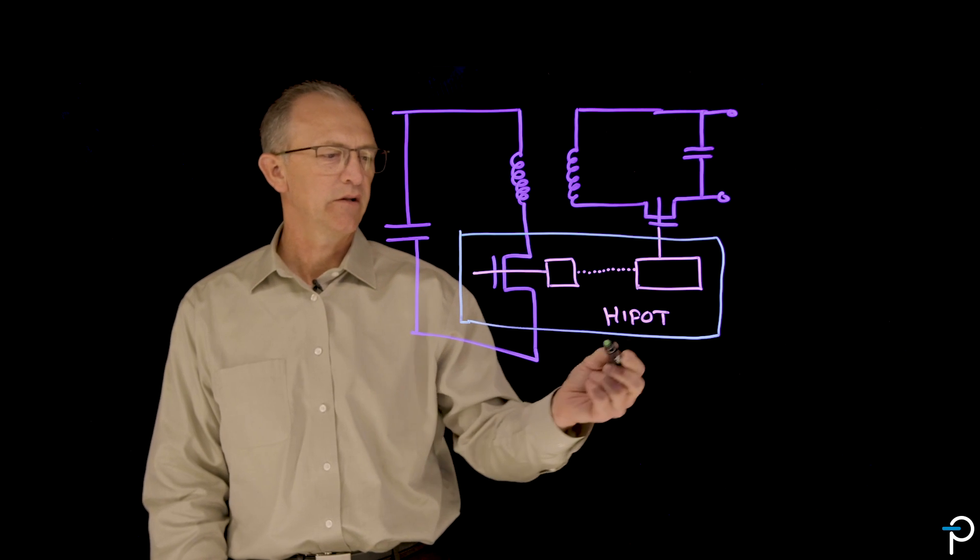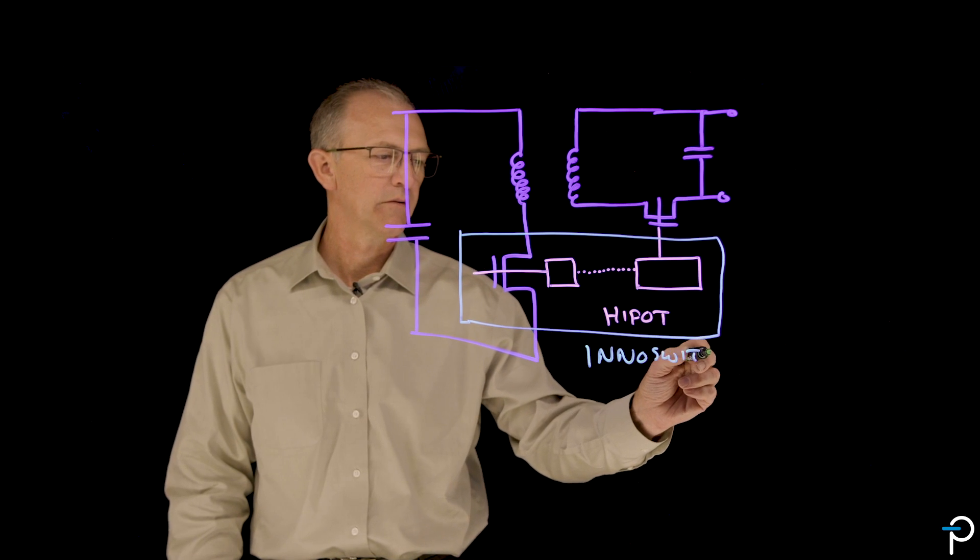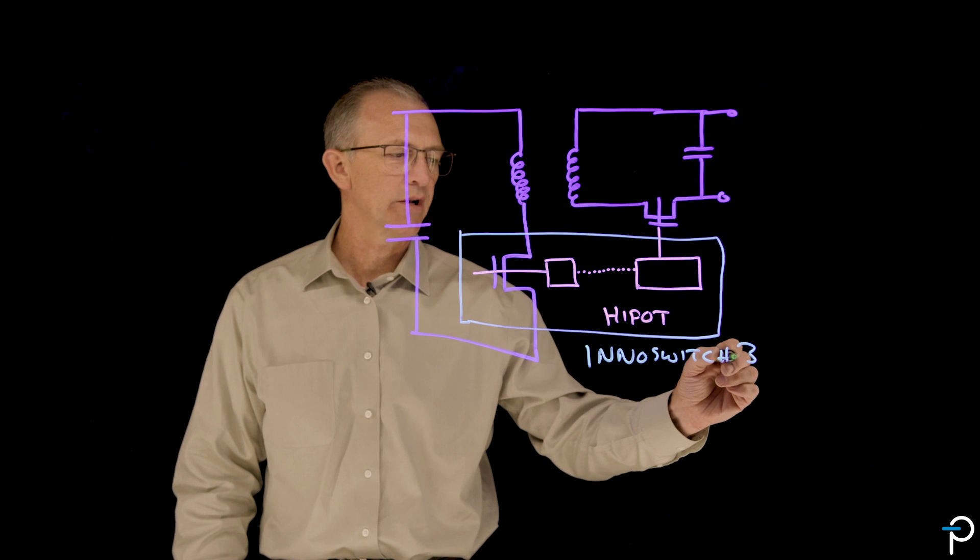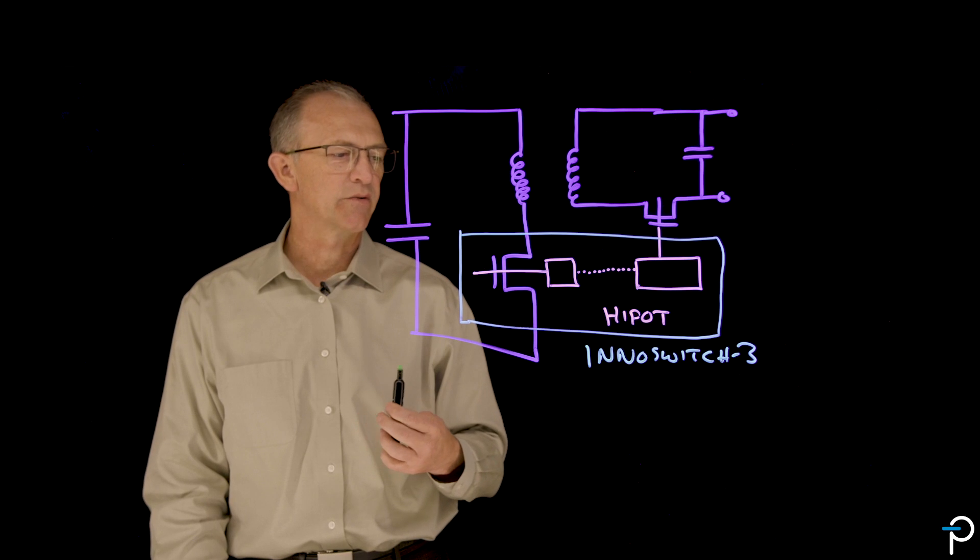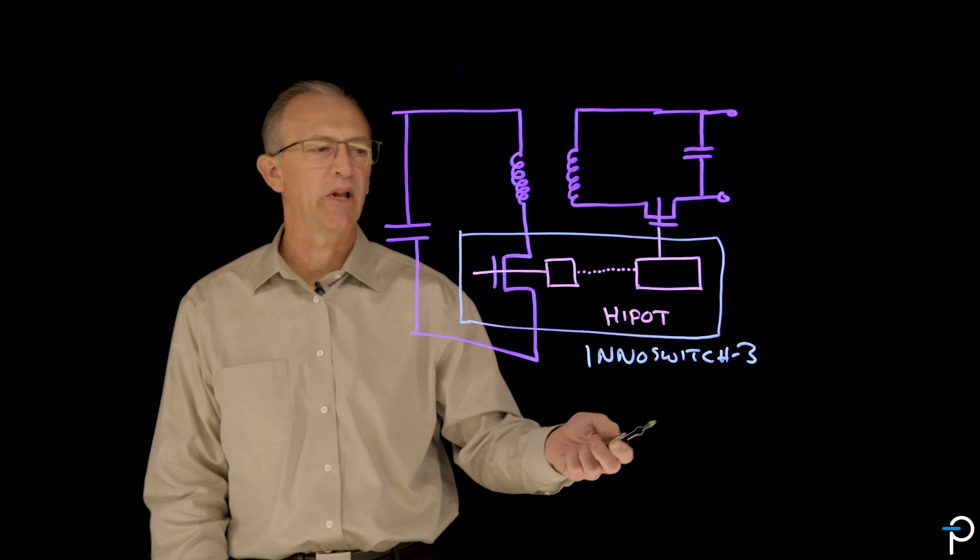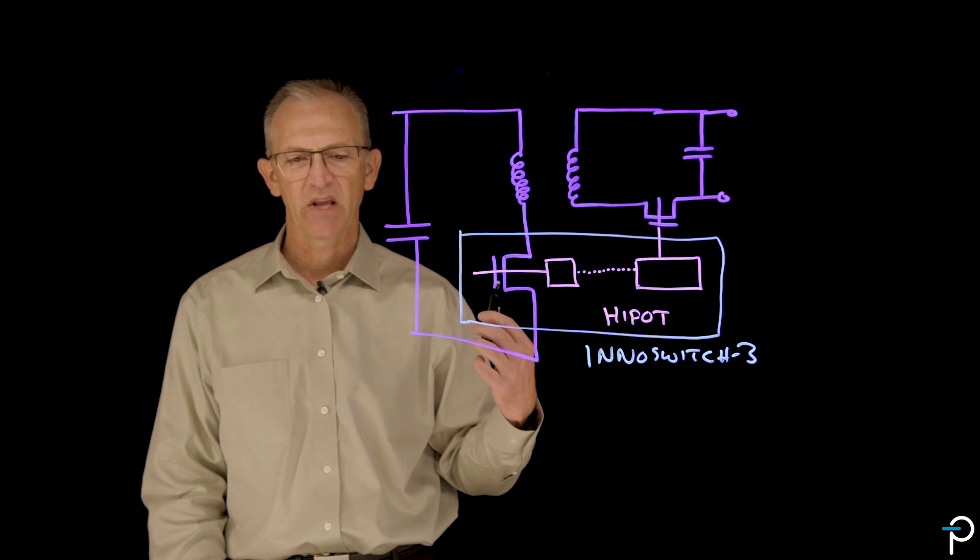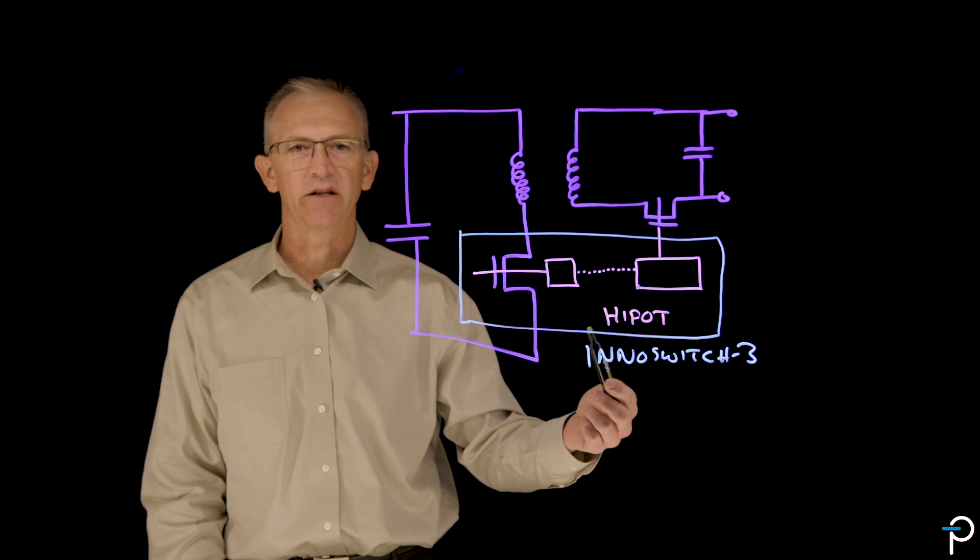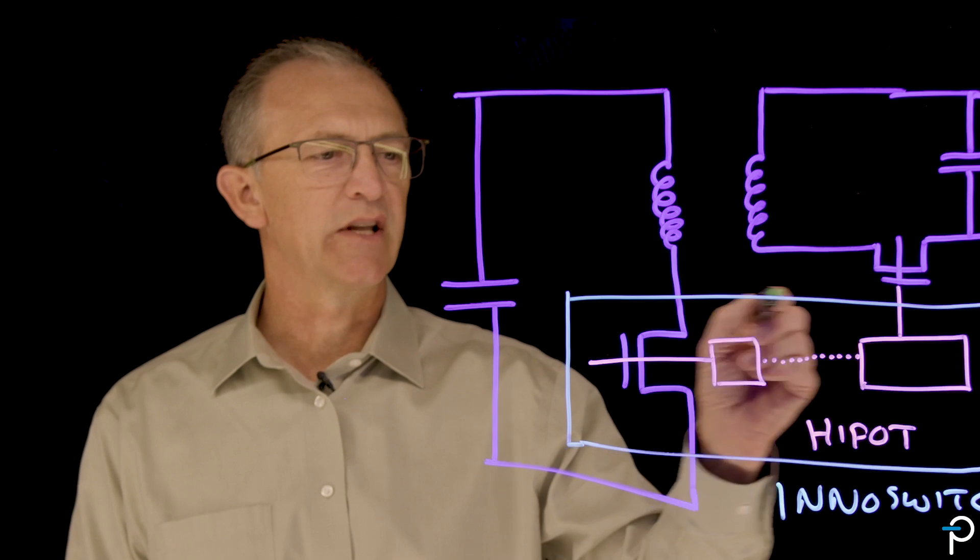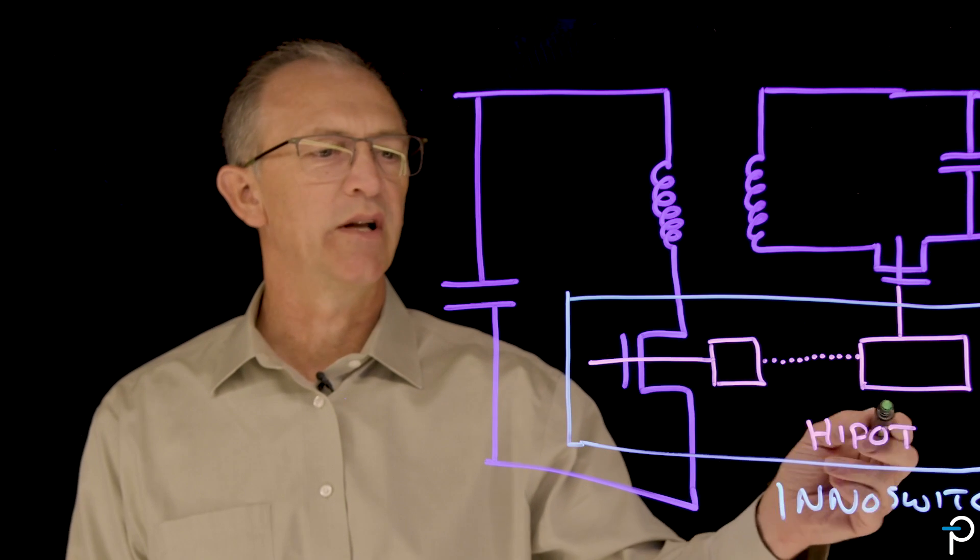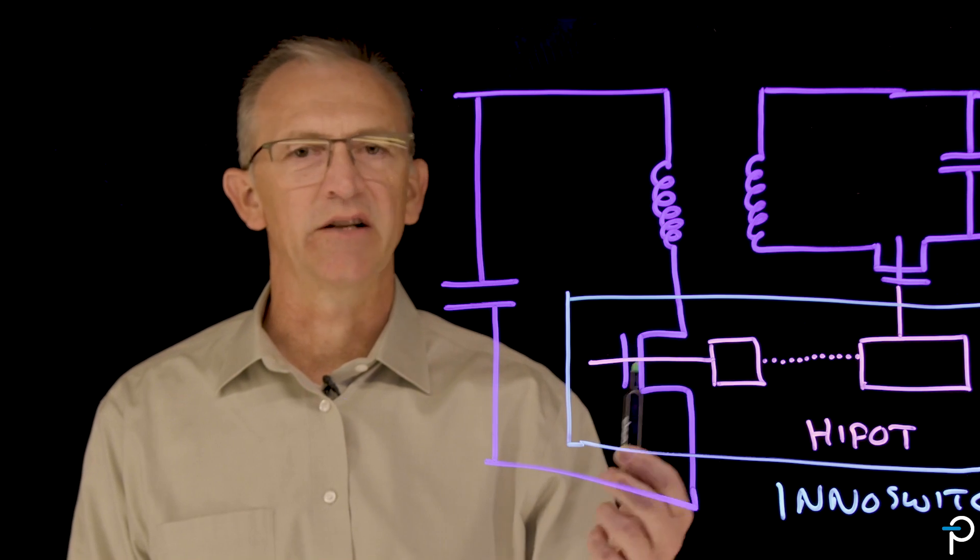And so our solution has been the InnoSwitch, InnoSwitch 3 product line that includes the Pro and other InnoSwitch 3 family members. We have a multiple output version called InnoSwitch 3 MX, and we have a version for LED lighting called LightSwitch 6. And all of those family members use the gallium nitride in the same way for the same purpose. And this is why we don't sell the switches as a standalone discrete device.